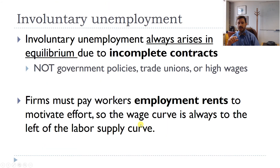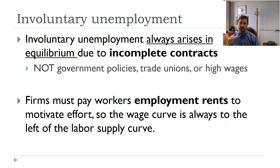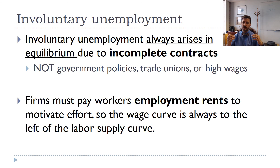As discussed in chapter six, because we have incomplete contracts and because firms choose to pay efficiency wages, we end up with involuntary unemployment. That's always going to be the case because of these incomplete contracts — it's not necessarily due to government policies, trade unions, or high wages. That's not to say government policies can't cause an increase in unemployment, but it's not going to be the main cause in most modern industrial economies. It's really all about employment rents: workers don't want to lose those employment rents, so they're willing to work harder the larger those rents are.